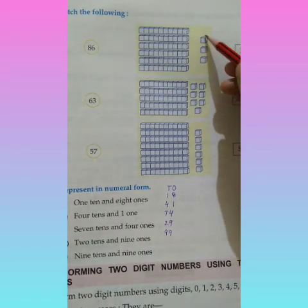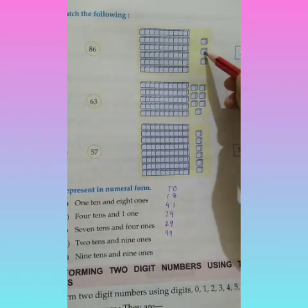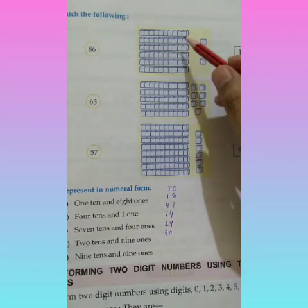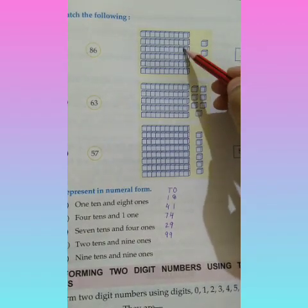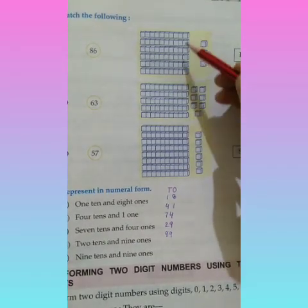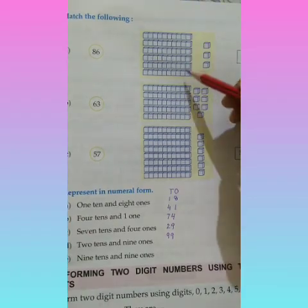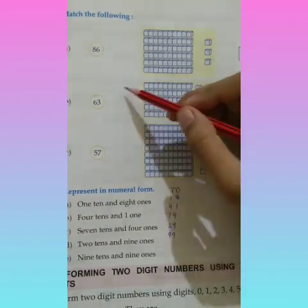Let's count. How many ones are there? Single unit ones. 1, 2, 3. 3 ones and 1, 2, 3, 4, 5, 6. 6 tens. 6 tens, 3 ones.